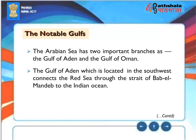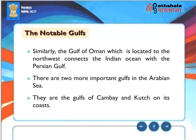The notable gulfs. The Arabian Sea has two important branches as the Gulf of Aden and the Gulf of Oman. The Gulf of Aden, which is located in the southwest, connects the Red Sea through the Strait of Bab-el-Mandeb to the Indian Ocean. Similarly, the Gulf of Oman, which is located to the northwest, connects the Indian Ocean with the Persian Gulf. There are two more important gulfs in the Arabian Sea — the gulfs of Cambay and Kutch on its coasts.